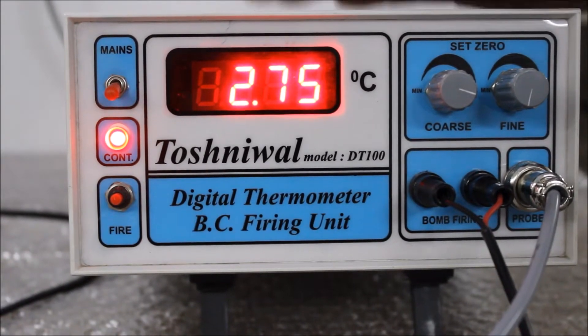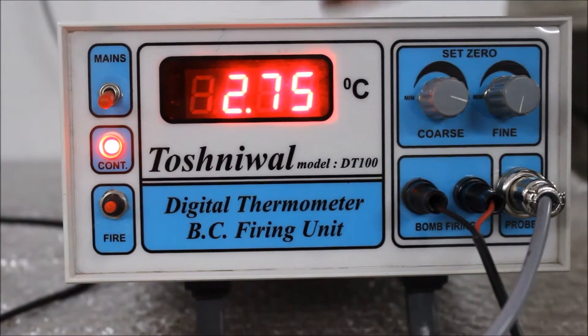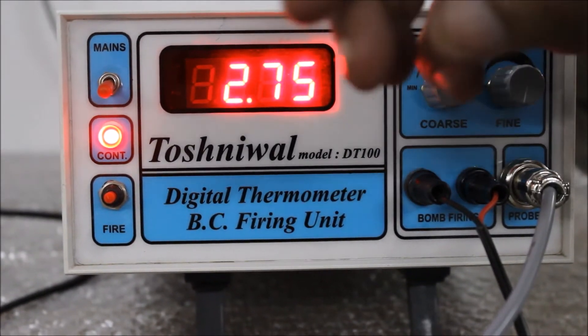Once the differential temperature reading becomes stable, in this case 2.75 degrees Celsius, we can then switch off the firing unit.